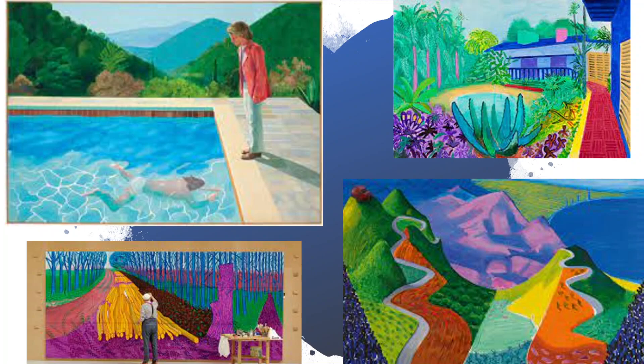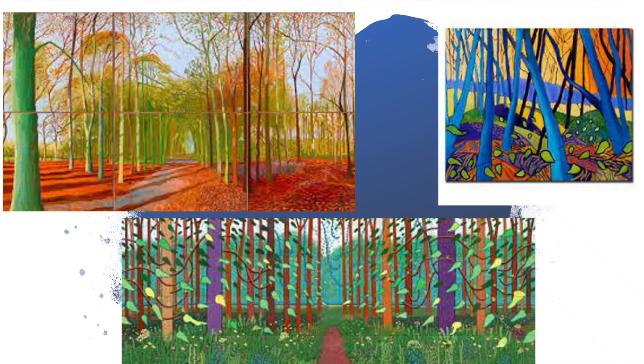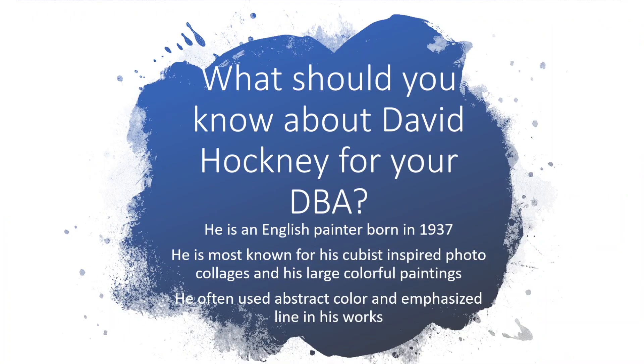When Hockney works in that abstract style with beautiful broad bright color, subject matter becomes landscapes very often — trees reaching up. His use of line is very much emphasized, seen in those trees going up creating vertical lines, as well as horizontal lines from the pool or the horizon line in the bottom left. He used abstracted primary and secondary colors in those big works. You'll want to know he was that English painter born in 1937 who worked in the 60s, 70s, and 80s and used bright colors when he wasn't doing photo collages.